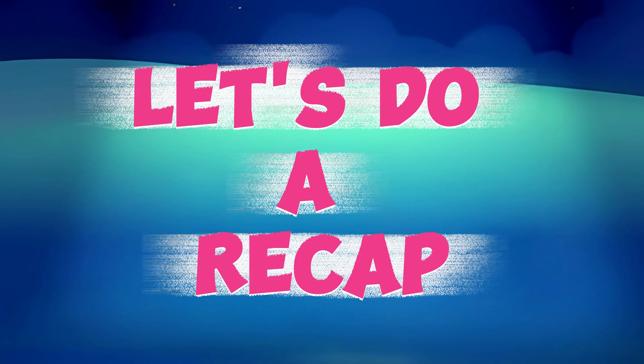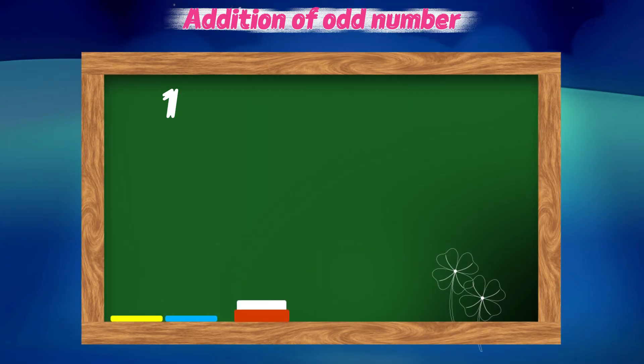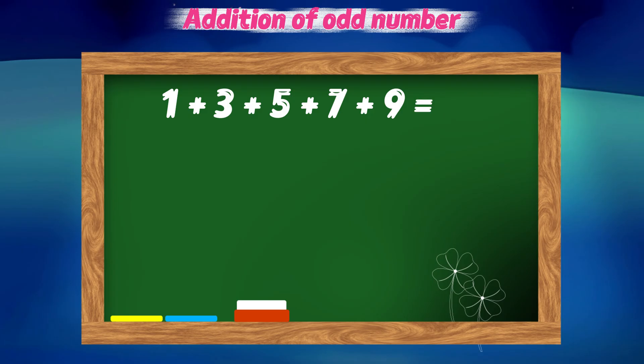Let's do a recap. Let's learn addition of odd numbers. 1 plus 3 plus 5 plus 7 plus 9 equals 25.